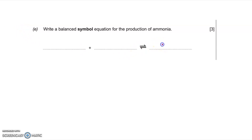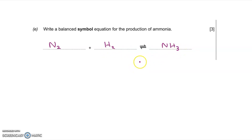Ammonia has the formula NH₃ — one mark for the correct formula. Ammonia is made by reacting nitrogen (N₂) and hydrogen (H₂) together — one mark for both correct formulas. The final mark is for balancing the equation: with two nitrogens on the left, place a 2 in front of NH₃, giving six hydrogens on the right, so place a 3 in front of H₂ to give six hydrogens on the left. That gives the balanced equation: N₂ + 3H₂ → 2NH₃.